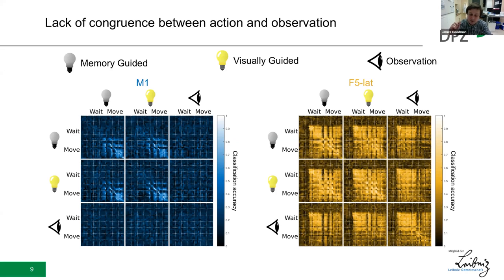This is a lot to take in, so I want to draw your attention to two things. One, how in M1 cross-classification is high between the two grasping tasks during the movement itself, but not anywhere else. And two, how in F5 cross-classification is high between different tasks and epochs generally, except when you consider when movement is occurring during the observation task. In general, across all areas and in two animals, we fail to see high cross-classification accuracy when comparing action and observation.